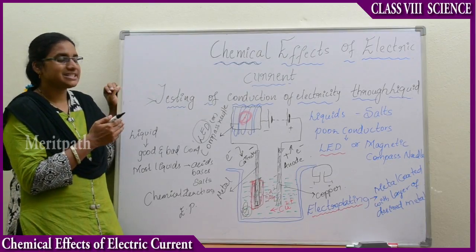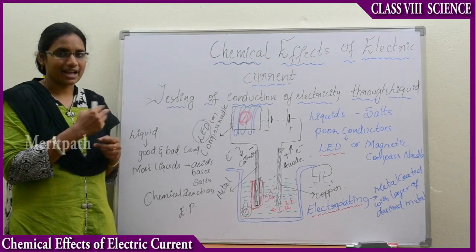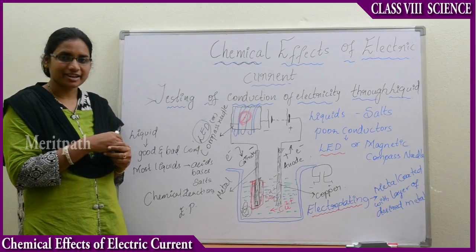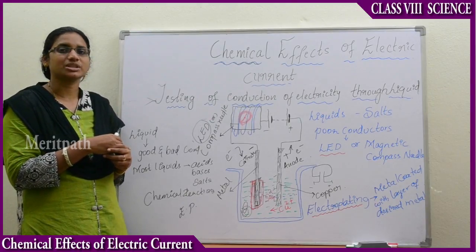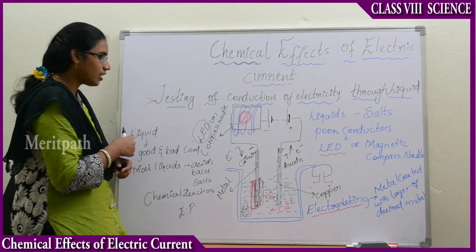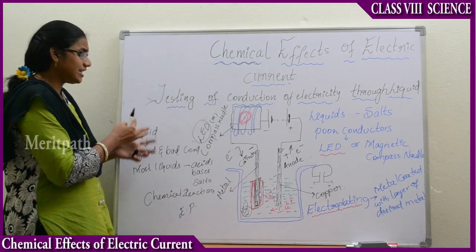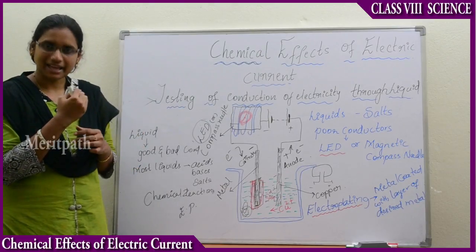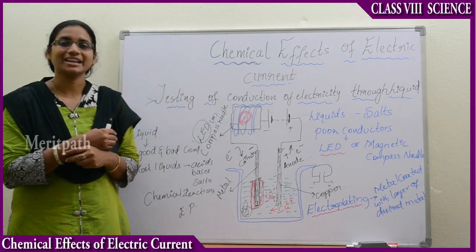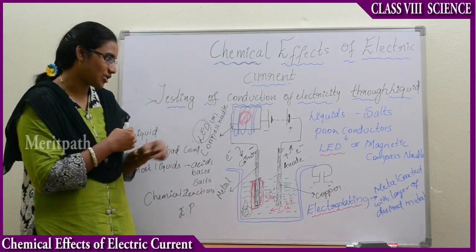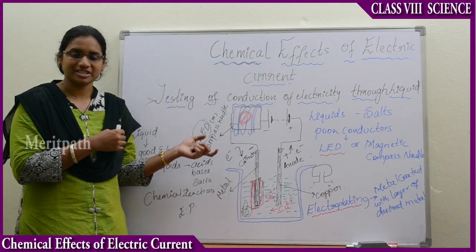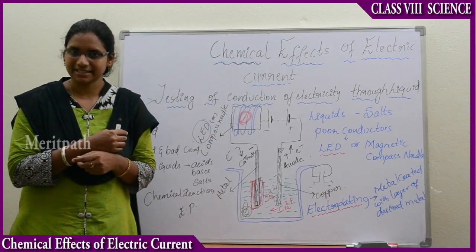The chemical effects of electric current involve chemical reactions which the conductors carry out in liquids. Even in liquids, liquids are classified into two types — that is, good conductors and bad conductors, or poor conductors of electricity. Even poor conductor liquids can also be tested with the help of LEDs. LEDs are light-emitting diodes used in order to decide the capacity or strength of conduction of liquids.